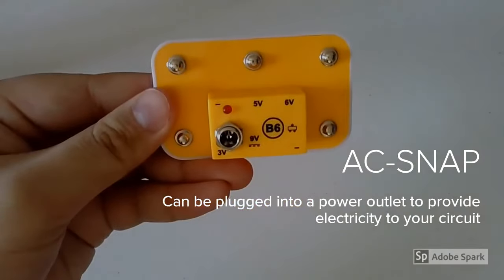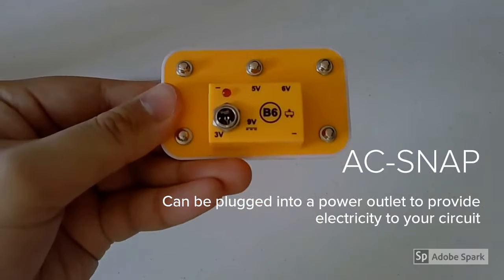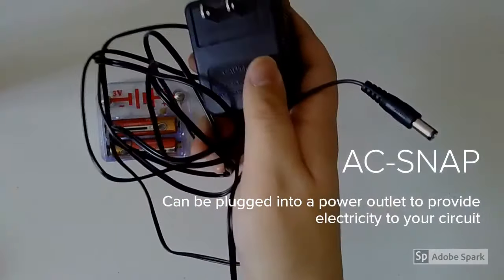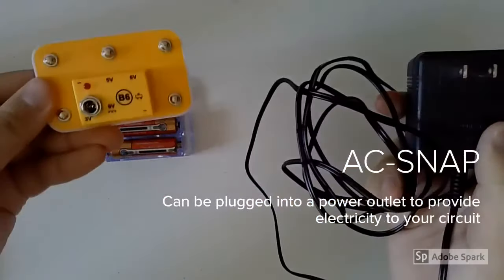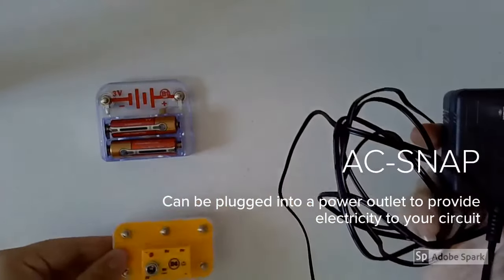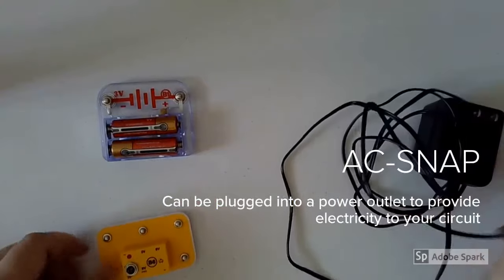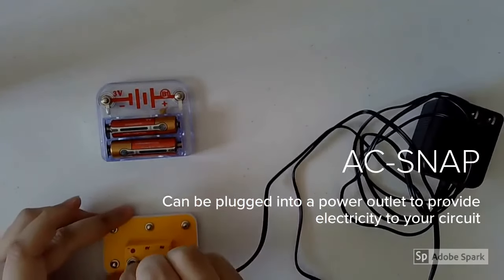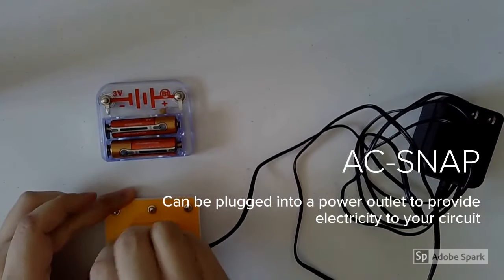You might also have this yellow component. This is called an AC Snap, which should also come with a wall mount AC adapter. This is an AC power supply that you can use to plug into a power outlet to use as your power source, instead of using the battery holder. All you have to do is use the component and plug in the wall mount, and then plug the wall mount into an outlet.